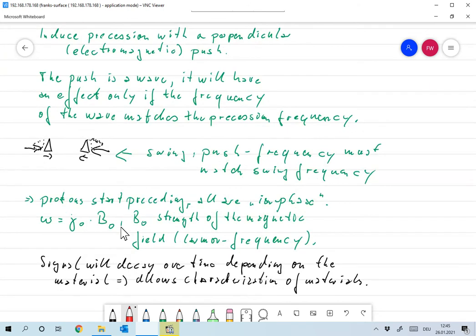The field that's sent in has a frequency and it has to match the precession frequency of the protons. Okay, so if it does, then that's great. Up to light speed, all protons will receive that push at the same time. So they will start precessing at the same time. And if the precession frequency matches the frequency of the wave that's coming in, then they will all start precessing at the same time and they will all now precess exactly in the same way.